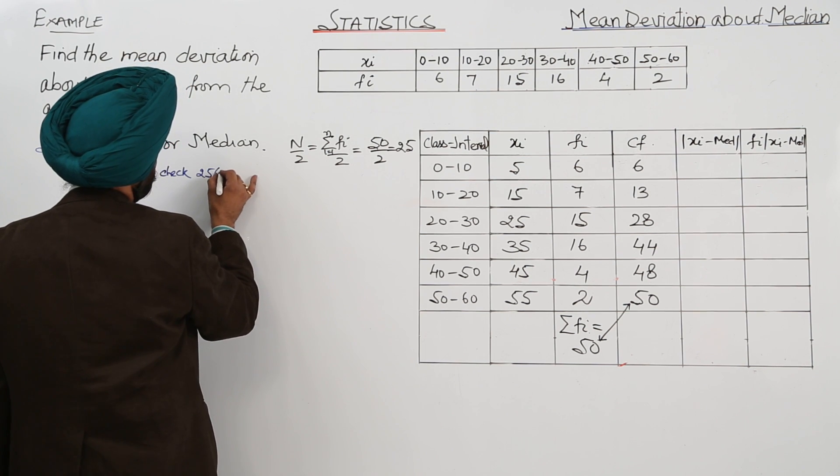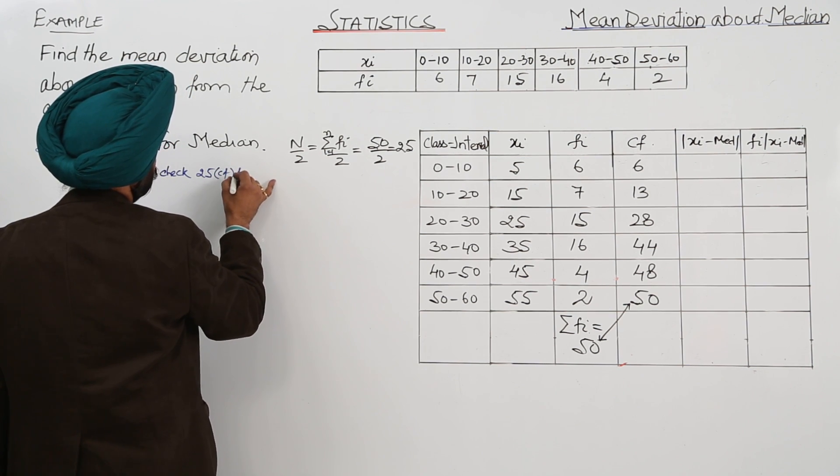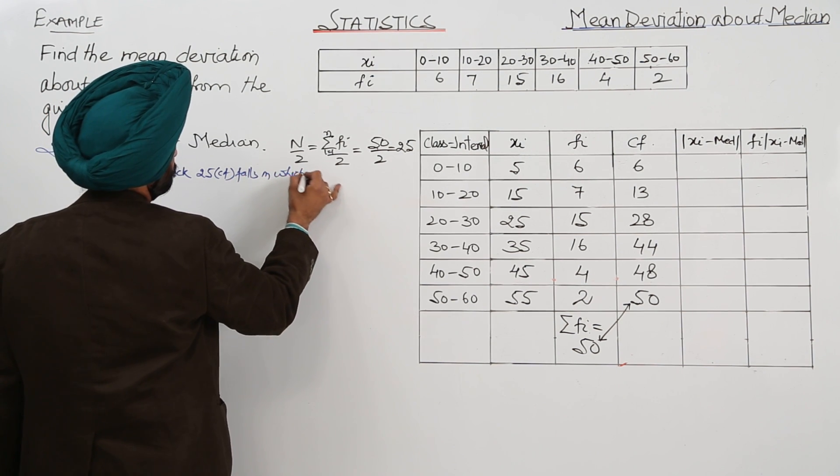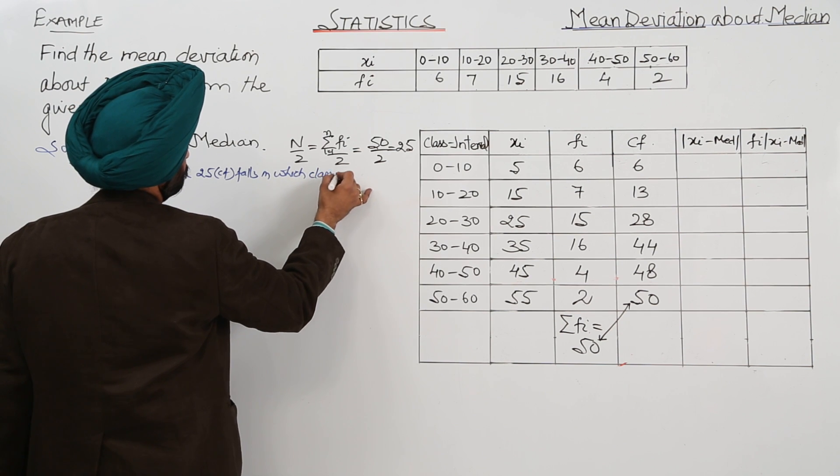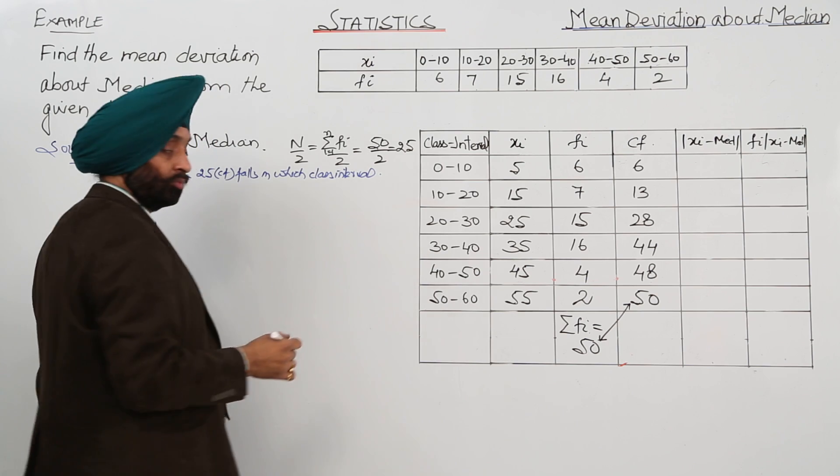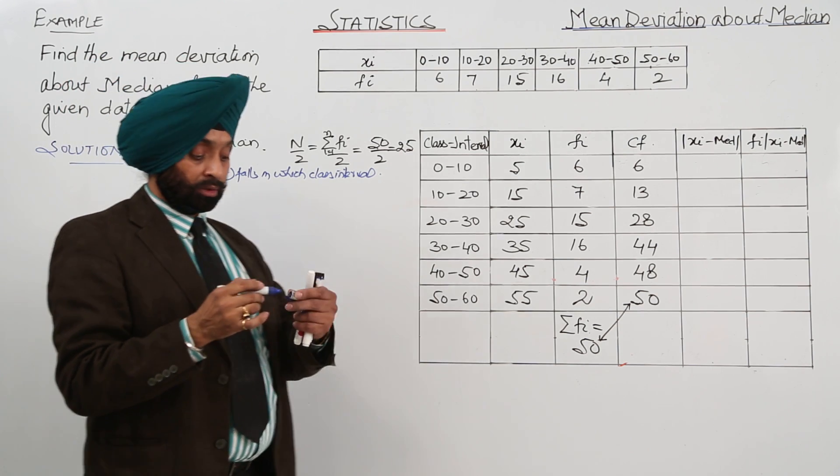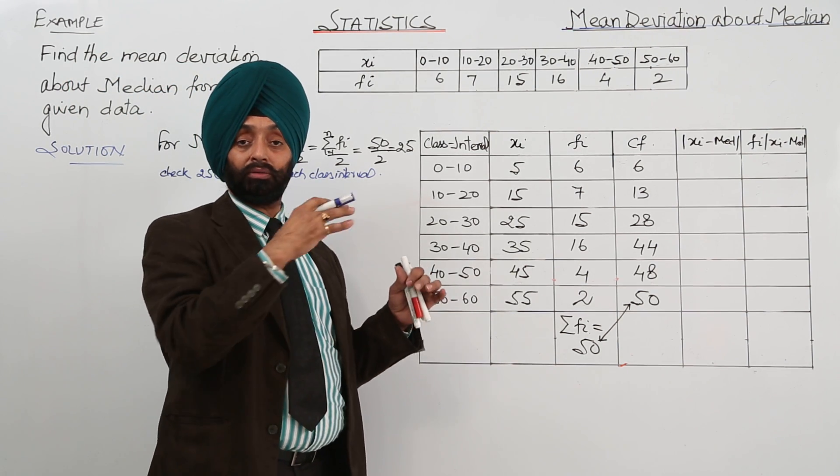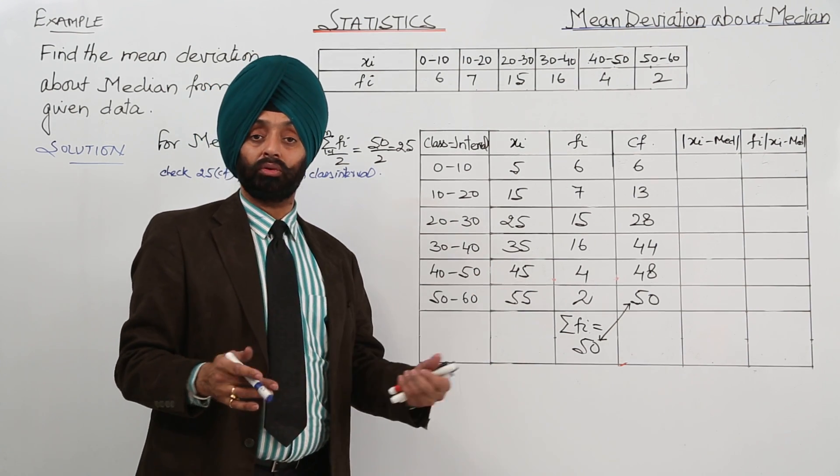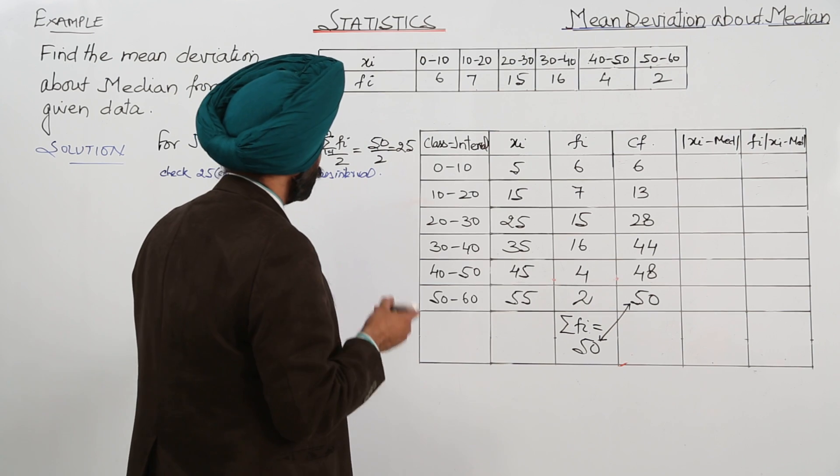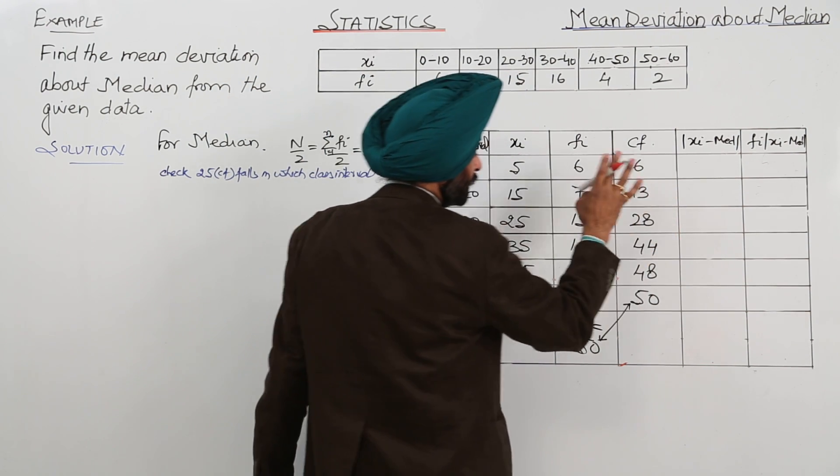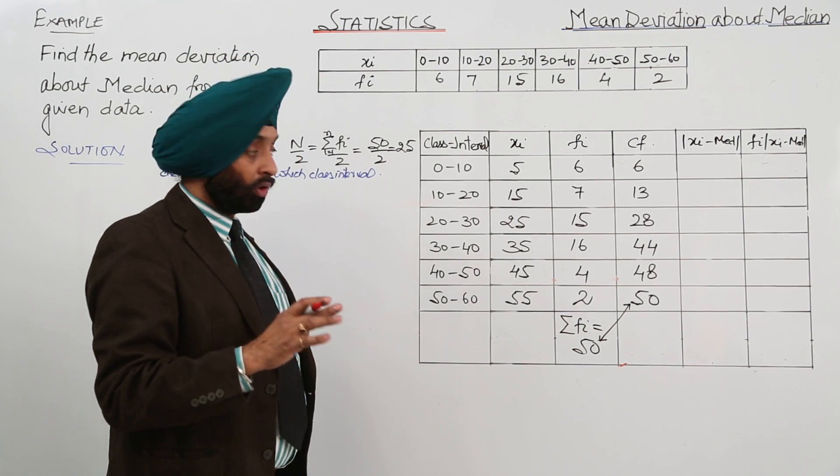25 from CF falls in which class interval? And again for the formula part we have to check the introduction. Check the formula where I have described when grouped data is there, how to locate the median. Now 25, from 13 to 28, 25 falls.